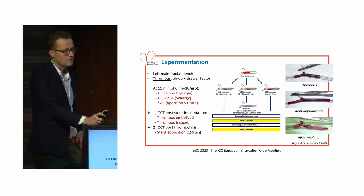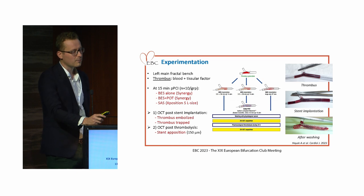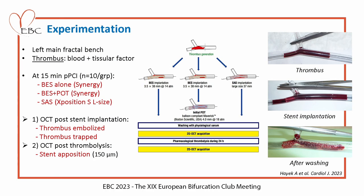We performed this experimentation in a usual left-main fractal bench. We created thrombus with blood and tissue factor, and after the thrombus was created, we compared three strategies of stenting: a balloon-expandable stent alone (Synergy), a second strategy with balloon-expandable stent followed by POT as recommended, and the last one was a self-apposing stent — the nitinol Exposition stent from Stentis. To simulate blood circulation, we performed manual saline solution washing, then a first OCT run to quantify trapped thrombus, followed by pharmacological thrombolysis during 24 hours and a new OCT.